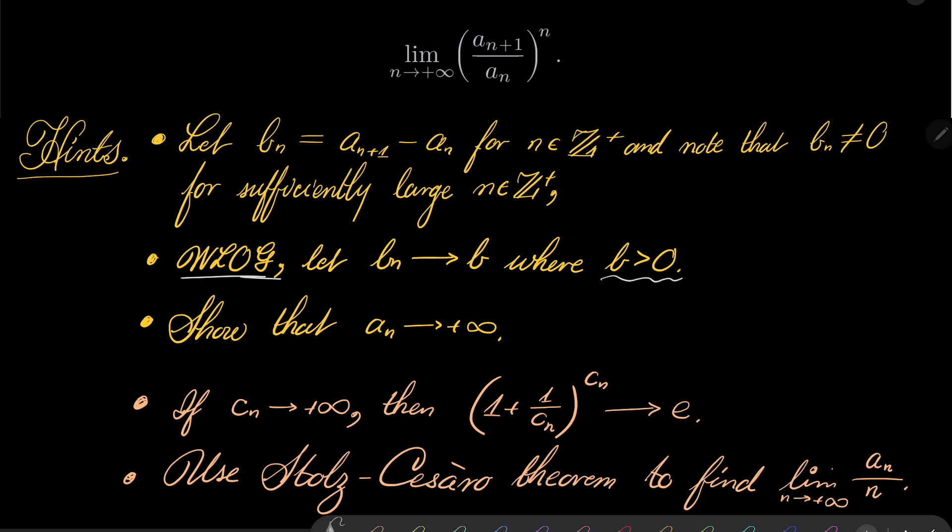and this number b is positive. Because for negative numbers b, show that it can be done without loss of generality. Pretty easy to demonstrate that. Next, show that a_n diverges to plus infinity.